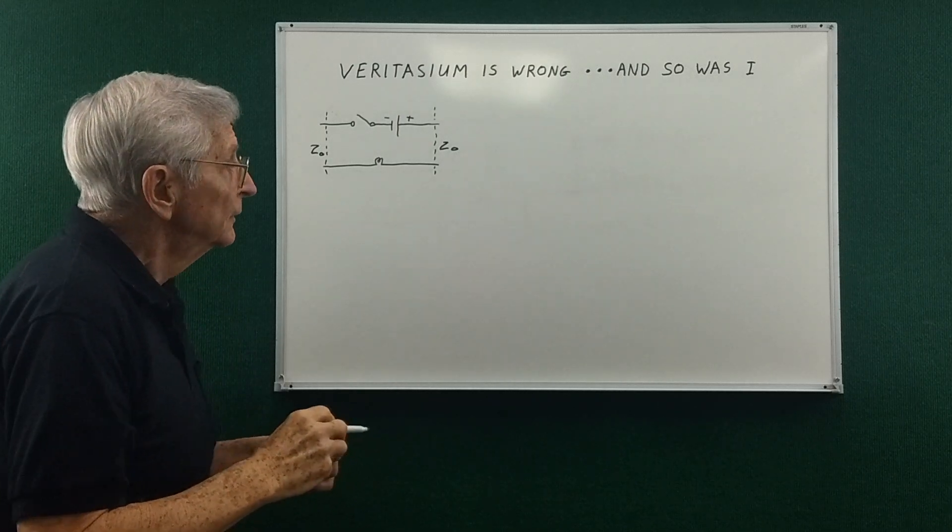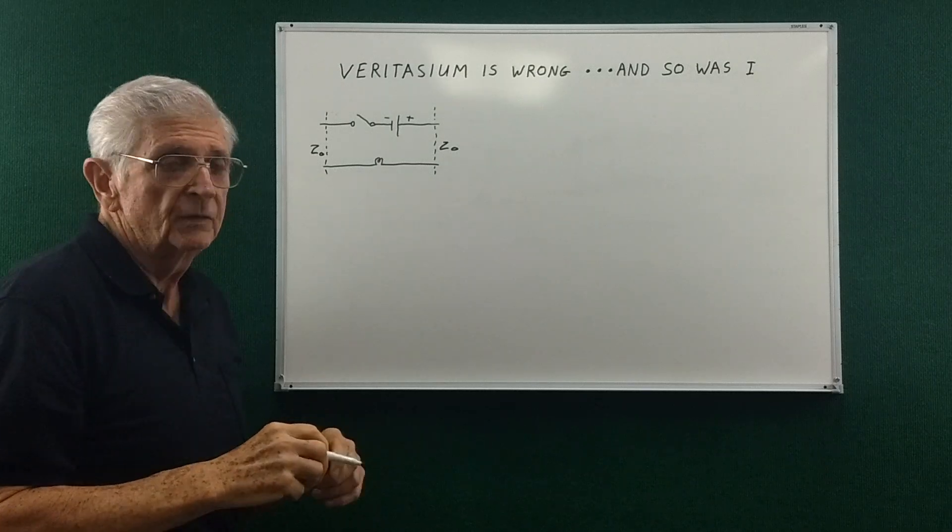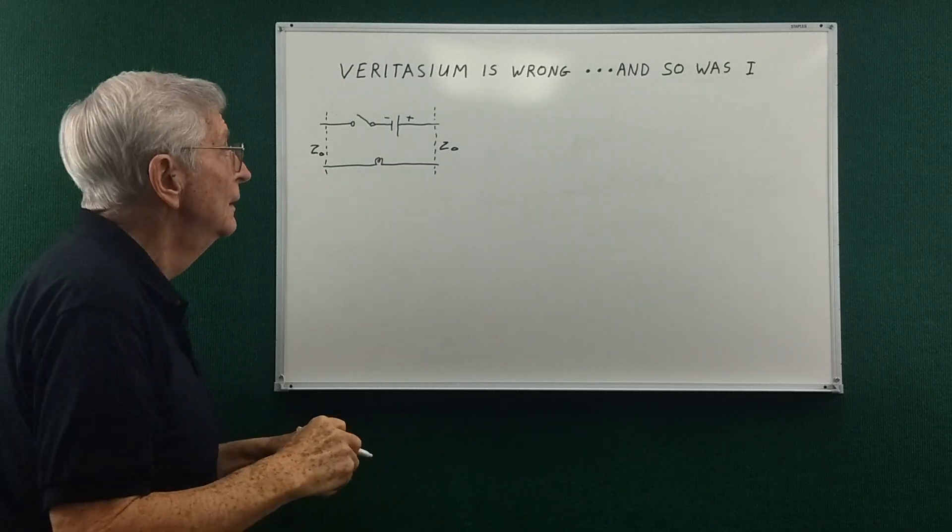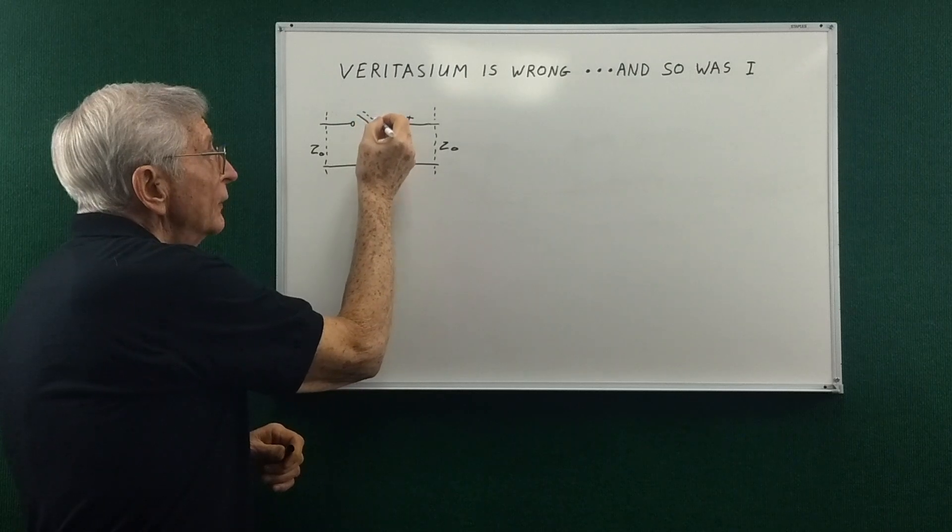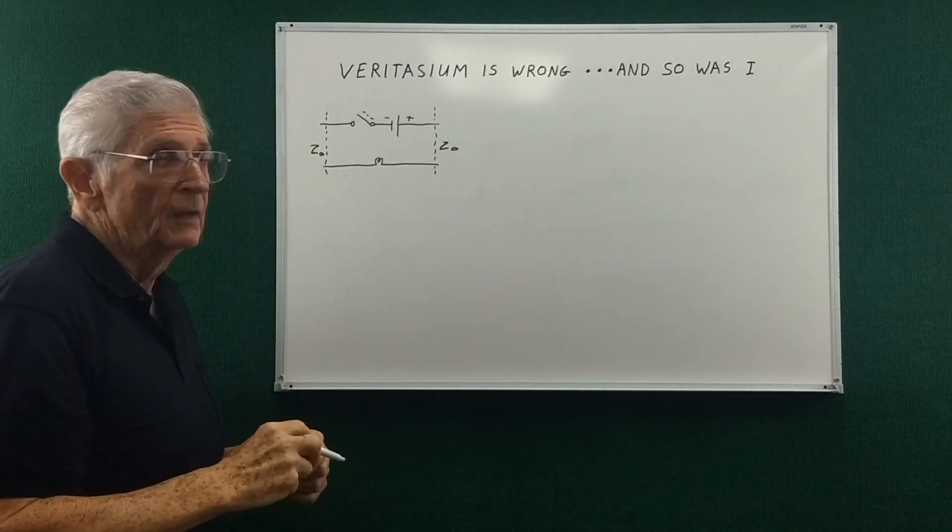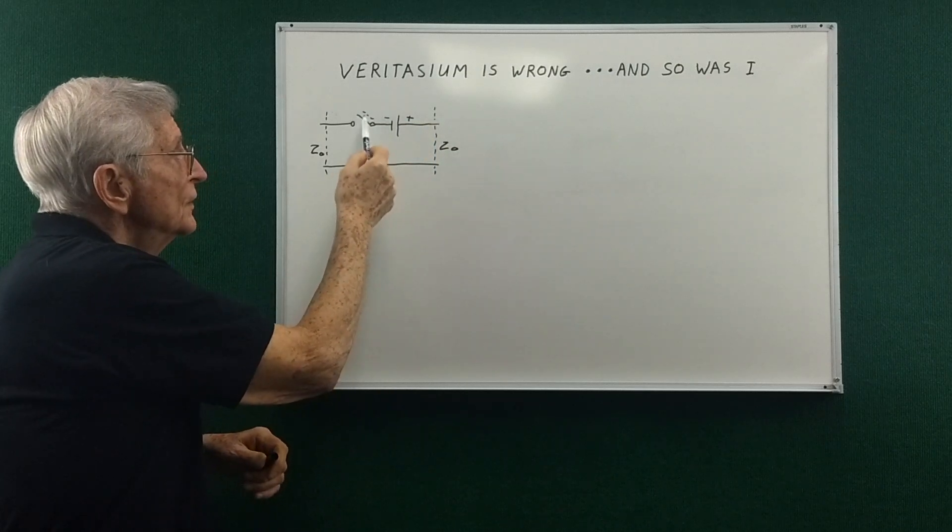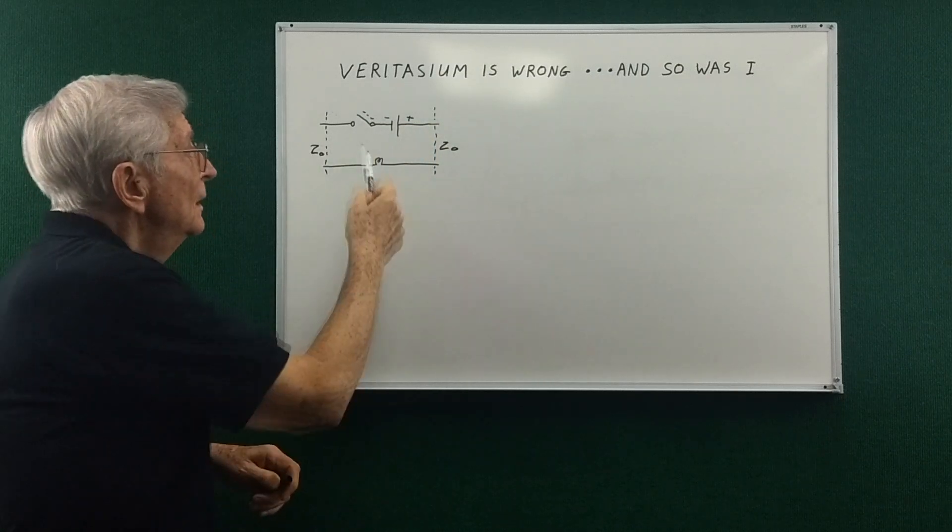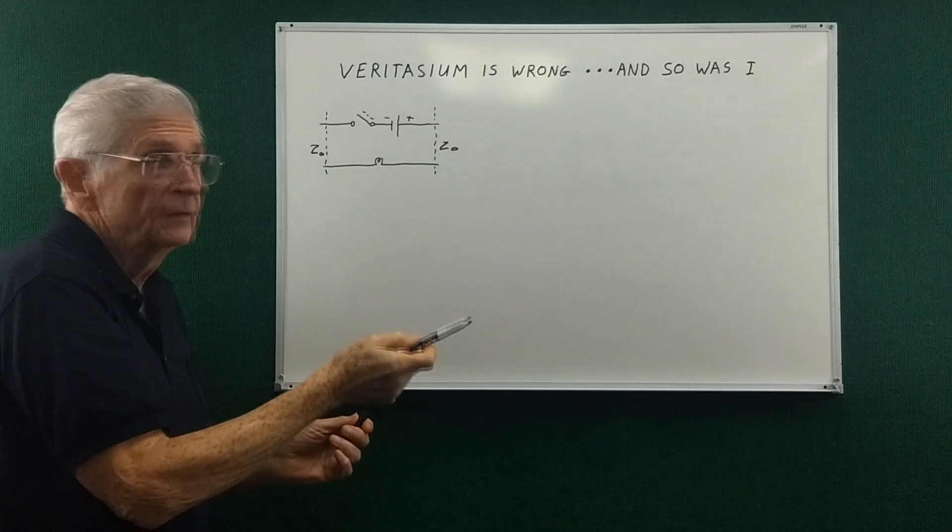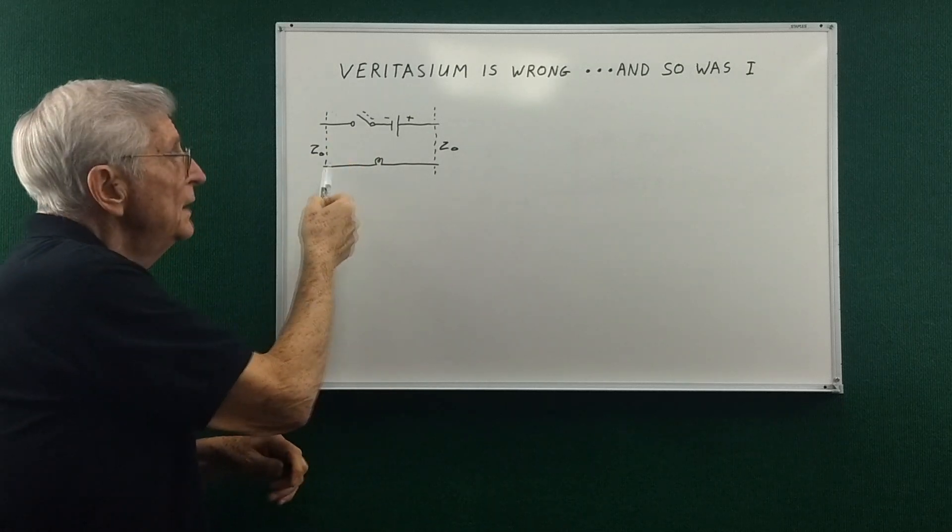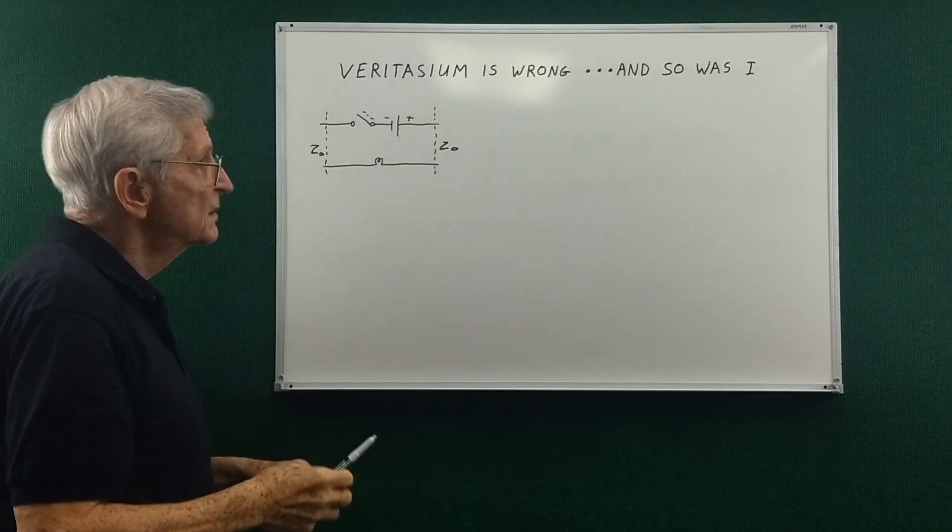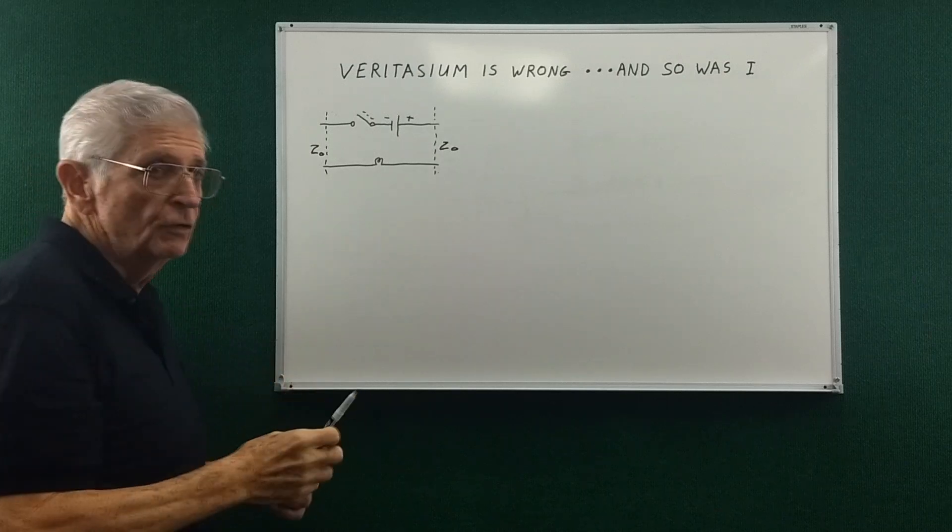Now from his statement about any current flowing I also came up with if there's charge on that switch and we start to move it because there's some capacitance that will induce a current through the transmission line impedance to the bulb.